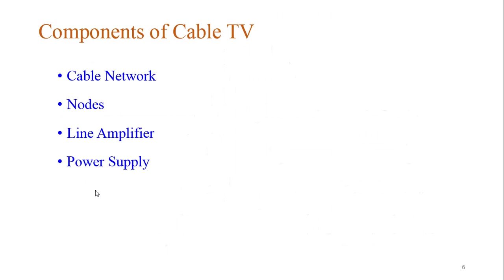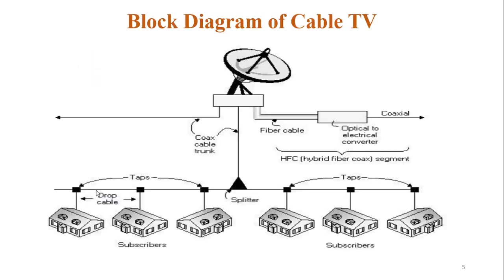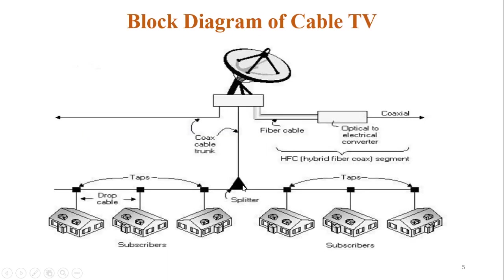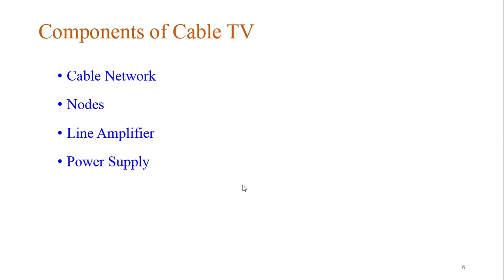These are the components of the cable TV network. The wire network starts from the starting point to the end users, called subscriber nodes. We can see the nodes and how the signal is transmitted. Line amplifiers are needed in between so that the signal quality is not degraded. For running these amplifiers and in-between devices, power is needed. Since the service provider cannot draw power from subscribers, a battery or power cell is needed to operate these devices.